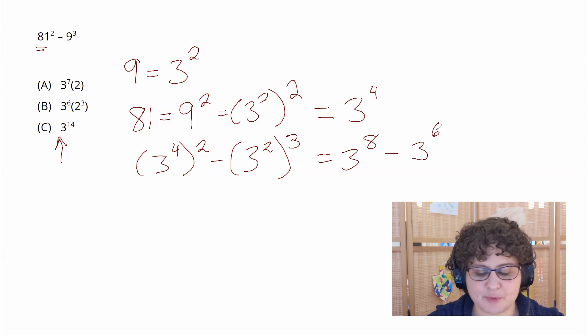Now at this point you may be tempted to do an incorrect simplification and say well these both have a base of 3 and 8 minus 6 is 2 so this simplifies to 3 squared. However that's not correct. Please don't fall for this and this may actually be one of the answer choices on a real GMAT question.